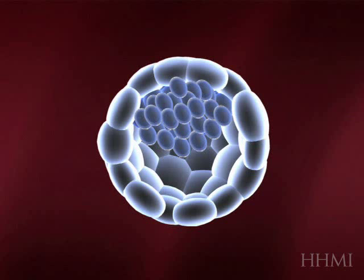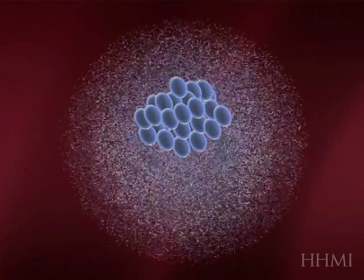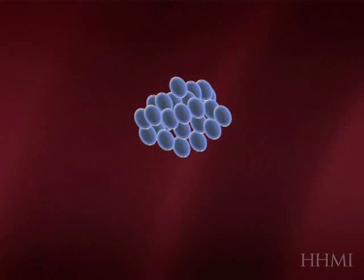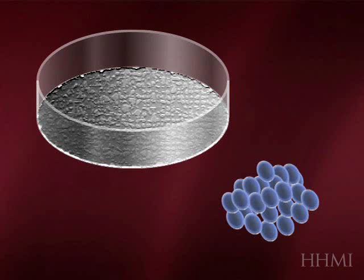The inner cell mass cells, which are going to be removed and grown in a petri dish, we first remove the outer layer that would normally form the placenta. Here the cells are put into a petri dish.